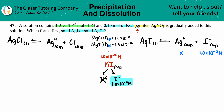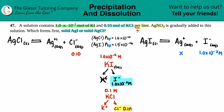For KCl: they told us 0.1 moles per liter, which is 0.1 M. KCl dissociates into K⁺ and Cl⁻. The Cl⁻ is the common ion matching the AgCl equation. Since it's 1 Cl per KCl formula unit, the starting [Cl⁻] is 0.10 M. We don't know the silver concentration, so we label that as x as well.